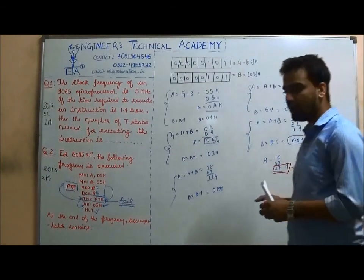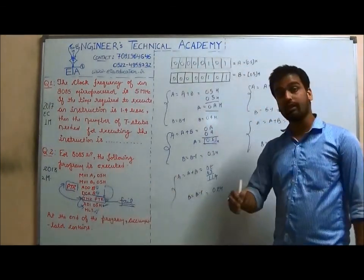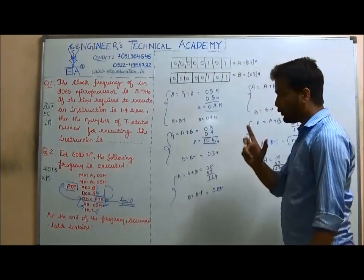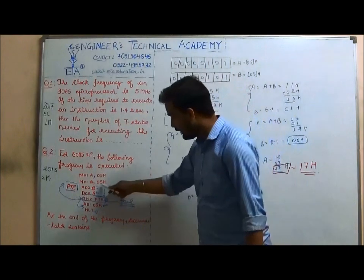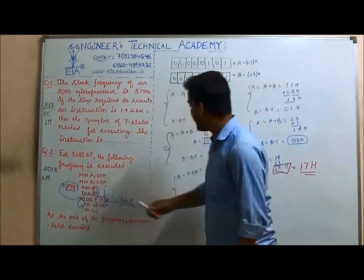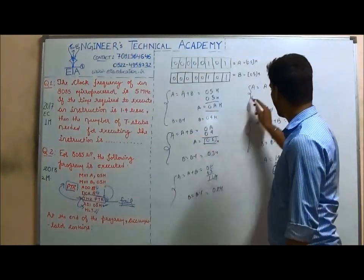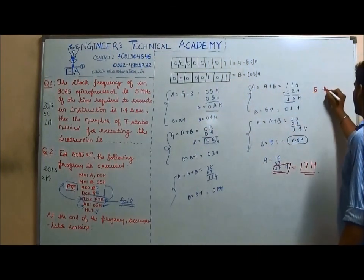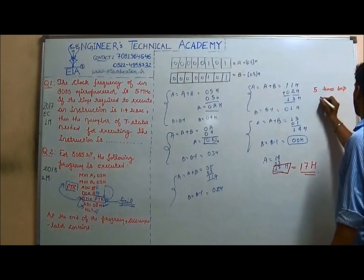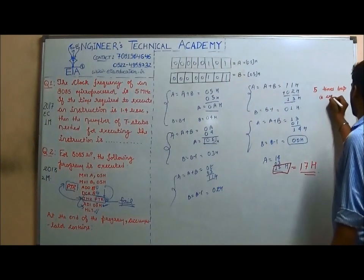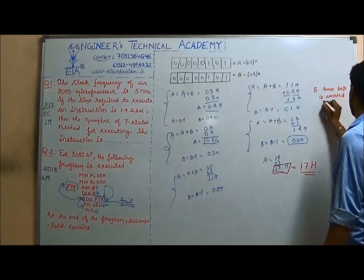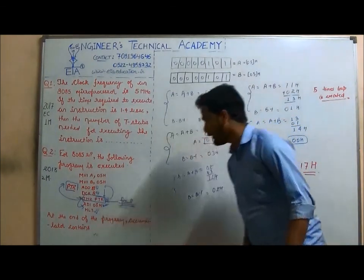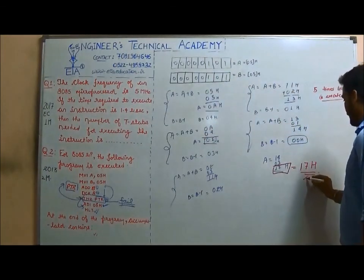This is how we execute our program — in our language, we dry run our program. We should remember that the loop was executed 5 times, and the final contents of the accumulator are 17H.